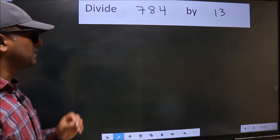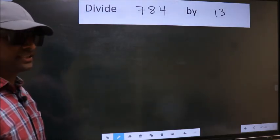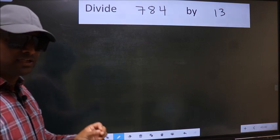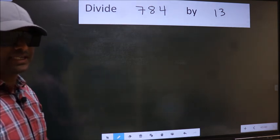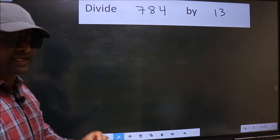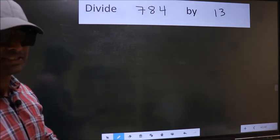Divide 784 by 13. While doing this division, many do this mistake. What is the mistake that they do? I will let you know. But before that, we should frame it in this way.